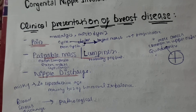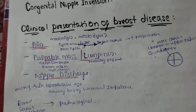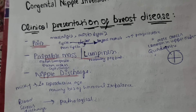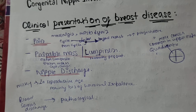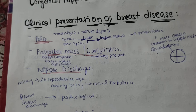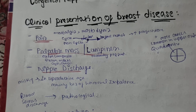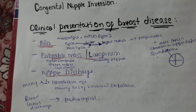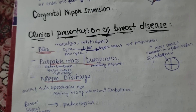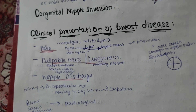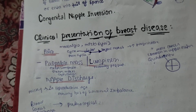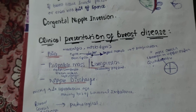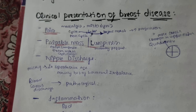The first clinical presentation is pain. The pain of the breast is called mastalgia or mastodynia. This pain is categorized as cyclic pain and noncyclic pain. Cyclic pain starts before each menstrual cycle and resolves once the cycle begins. Noncyclic pain is consistently and always present.